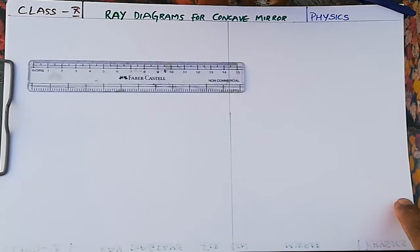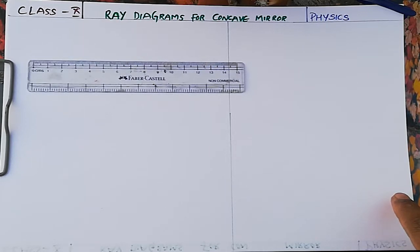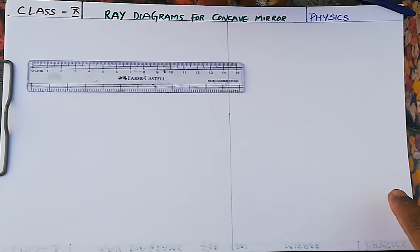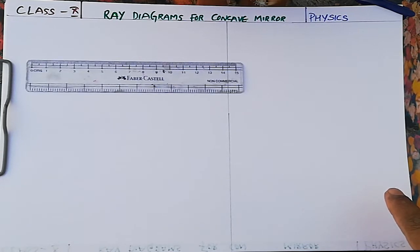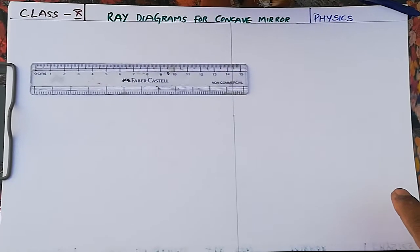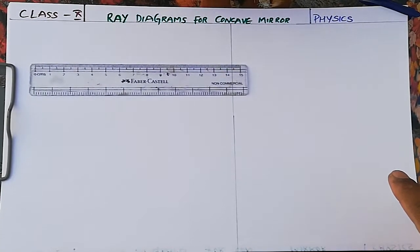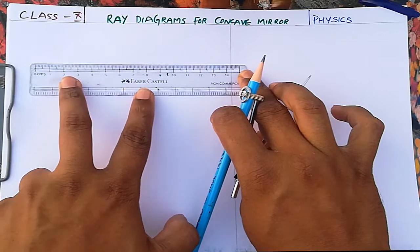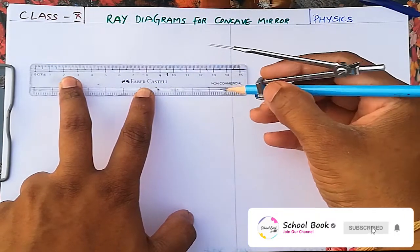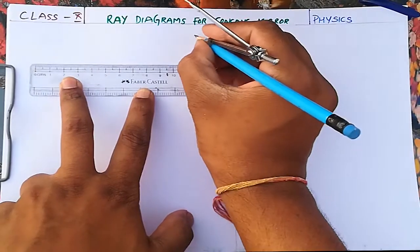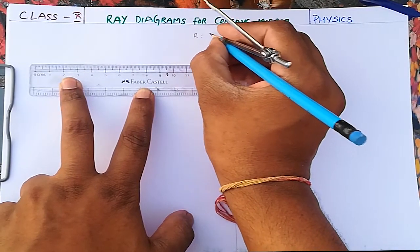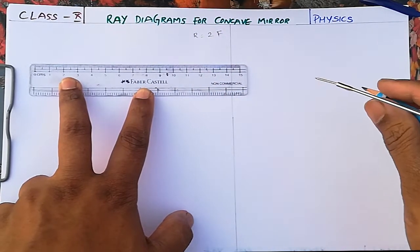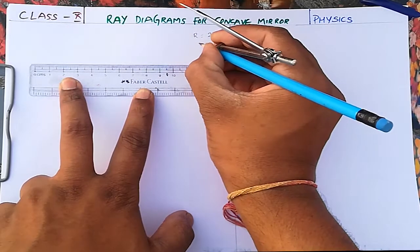This video is about the physics concept of reflection of light. I'm going to explain how to draw ray diagrams for a concave mirror in all six different positions, starting from the infinity position to the position between the focal point and the pole. We know that radius of curvature is two times the focal length: R = 2F, where F is the focal length and C is the center of curvature.